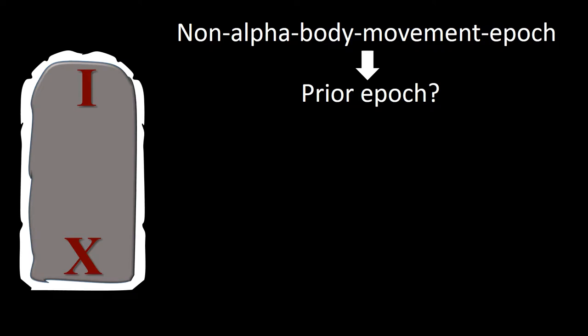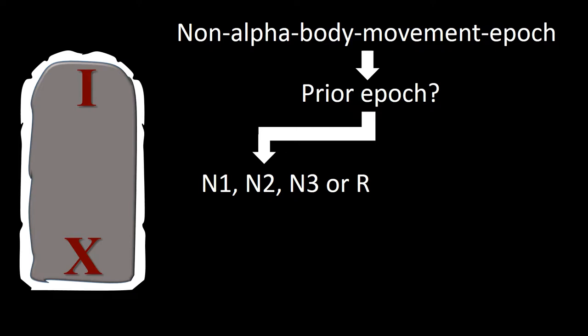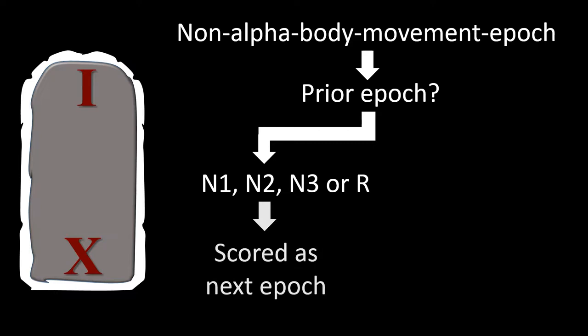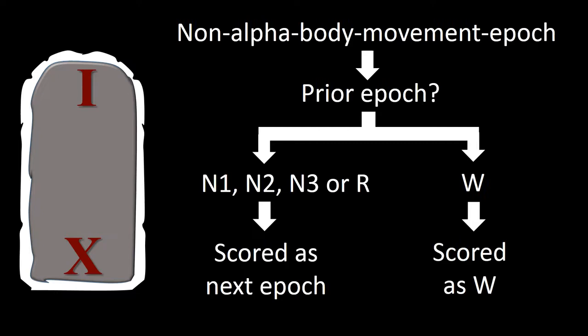For non-alpha body movement occupied epochs, the first step is to look at the prior epoch. If the prior epoch is N1, N2, N3, or R, then the epoch in question should be scored as the next epoch. If the prior epoch is W, then the epoch in question should be scored W.